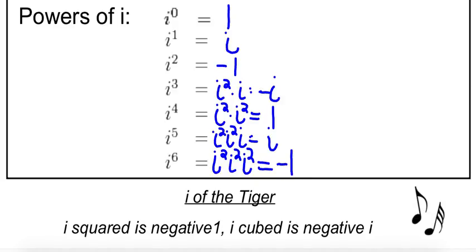And what you'll notice is these start to occur in patterns. It occurs in a pattern of 4: 1, i, negative 1, negative i, then 1, i, negative 1. So i to the seventh is going to be negative i. This pattern is going to keep repeating. So what that means is you can find any power of i pretty easily.